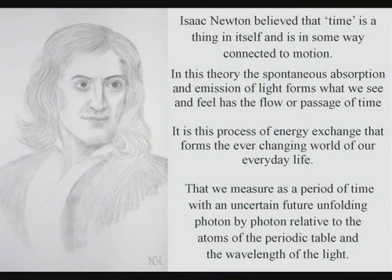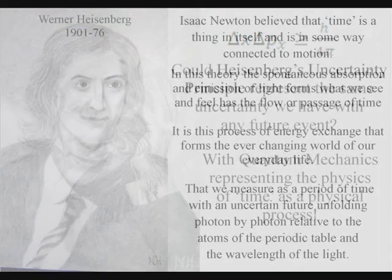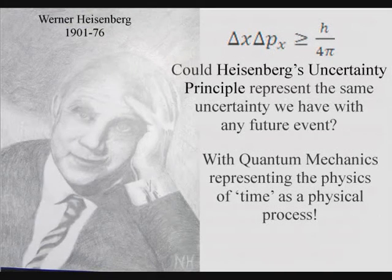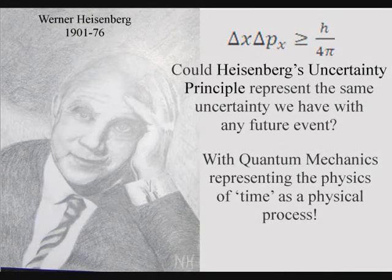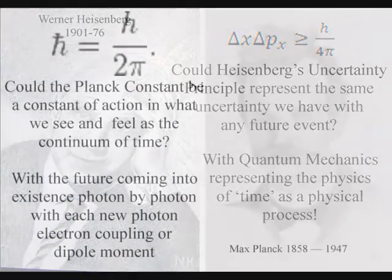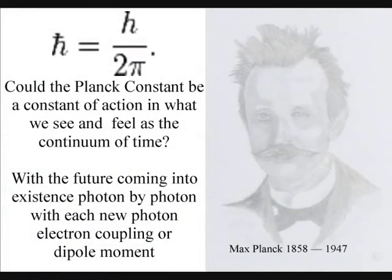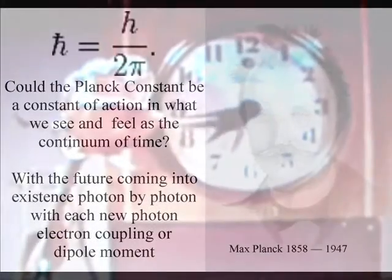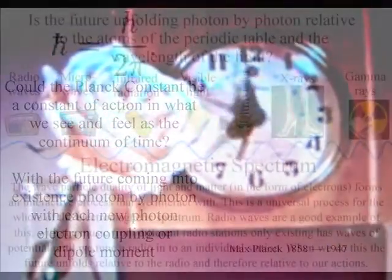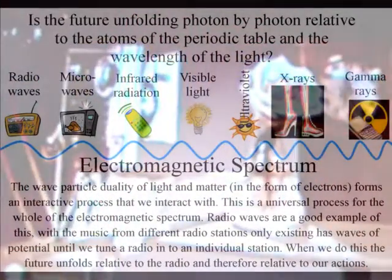At the smallest scale of this process, the future uncertainty of everyday life is represented mathematically by Heisenberg's uncertainty principle, with the Planck constant being a constant of action in the geometrical process that we see and feel as the passage of time.